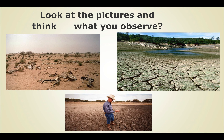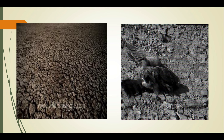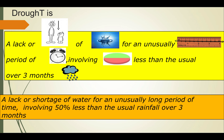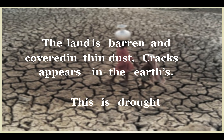Basically, drought is a condition of water deficit sufficient to have an adverse effect on vegetation, animals, and humans over a sizable area — specifically a shortage of water for an unusually long period involving 50% less than the usual rainfall over three months. The land becomes barren and covered in thin dust, and cracks appear in the earth.